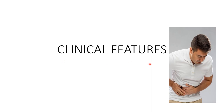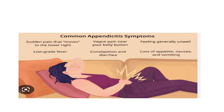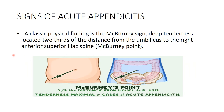Regarding clinical features — as seen in this picture, the patient presses both hands toward the lower right abdomen, which is the most important sign. The common symptoms of appendicitis are: sudden pain that moves to the lower right abdomen, low-grade fever, constipation and diarrhea, the patient feeling generally unwell, and loss of appetite, nausea, and vomiting.